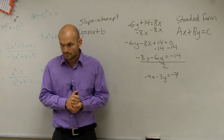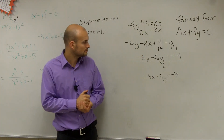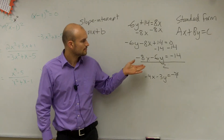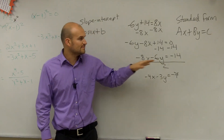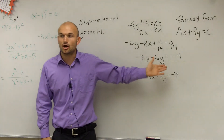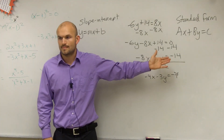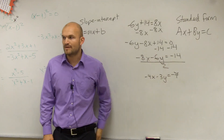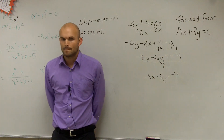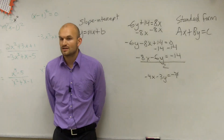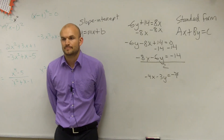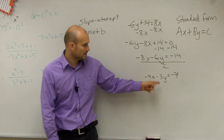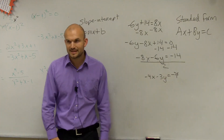Can you say what you said about the 8x minus 3y equals negative 14? Do you always divide all of them by 2? No, no. You only divide them if they have a common factor other than 1. Does every single one have to have a common factor, or just like 2 of them? A, B, and C all have to have a common factor other than 1. Or else it's not in standard form. So that's your answer, where A is negative 4, B is negative 3, and C is negative 7.